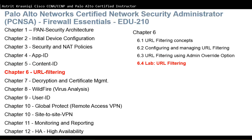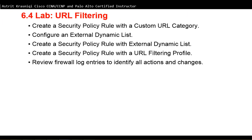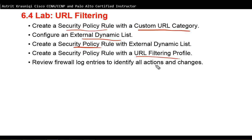Everything that we learned in Chapter 6 we're going to try and put it in this lab. We're going to configure and create a security policy rule with a custom URL category. We already have a security policy rule but I'm going to edit that, create a custom URL category from scratch, and add it to the security policy rule. We're going to configure an external dynamic list pointing to a list on our server in the demilitarized zone, bring that list into our security policy rule, create a security policy rule with a URL filtering profile, and check the log entries.